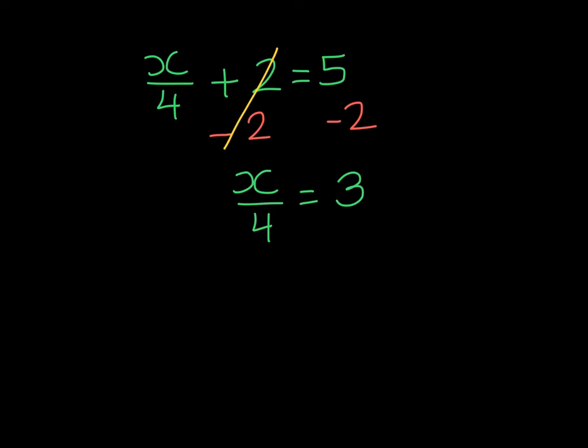At this point, we see x is being divided by 4, so the inverse is to multiply by 4 on both sides. Remember, 4 divided by 4 will give us 1, so 1 will go with x, and 3 times 4 is 12.